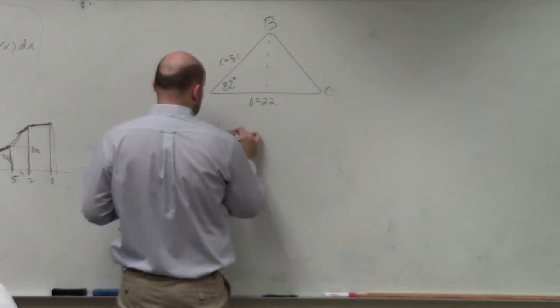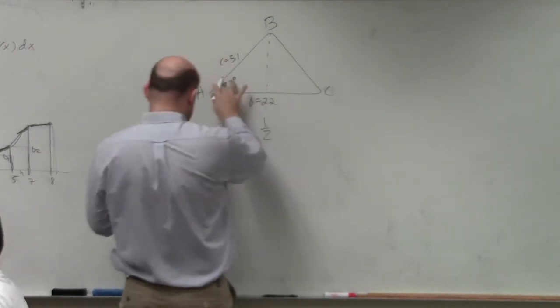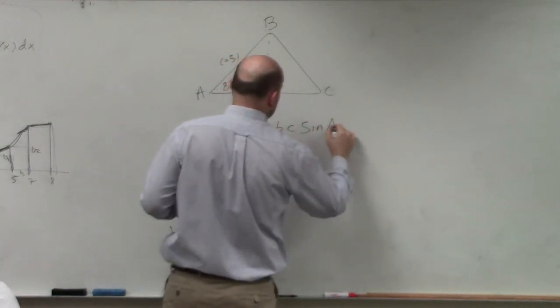So the area of this triangle is equal to one-half. I'm sorry, I'm given angle A, so this is going to be B times C times sine of A.